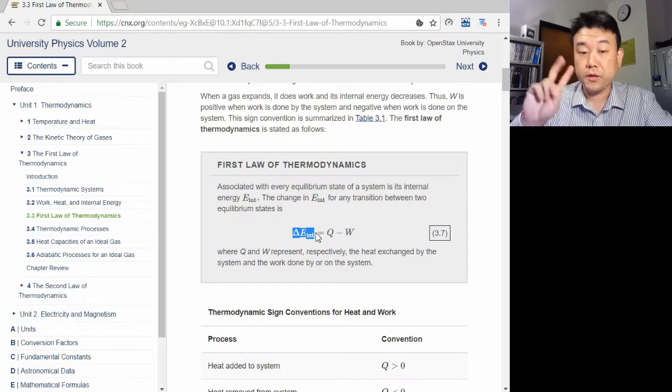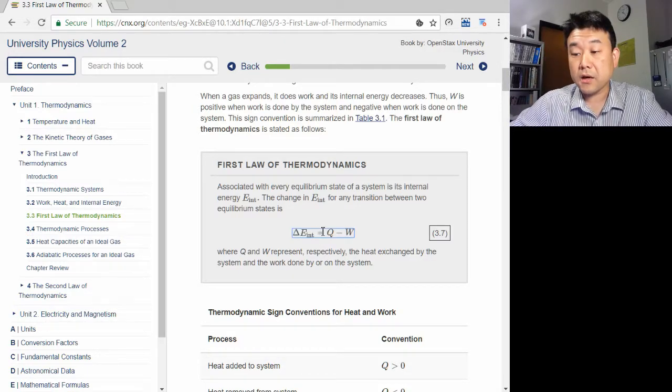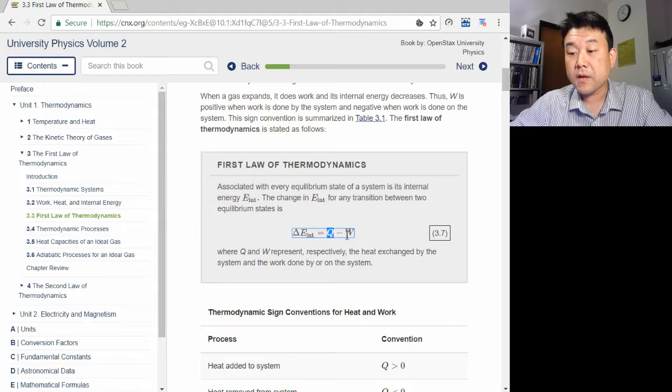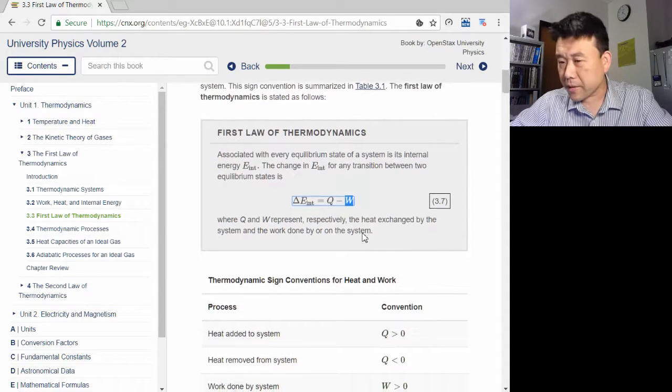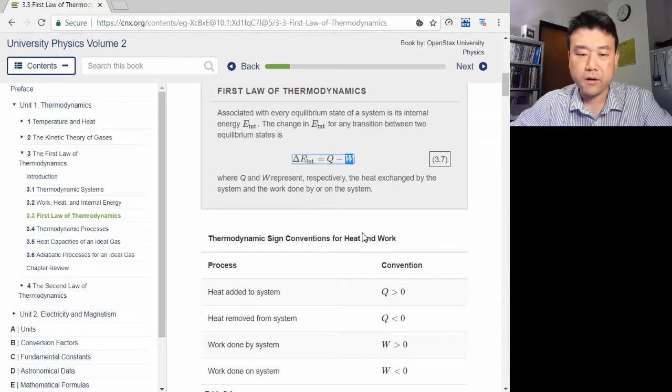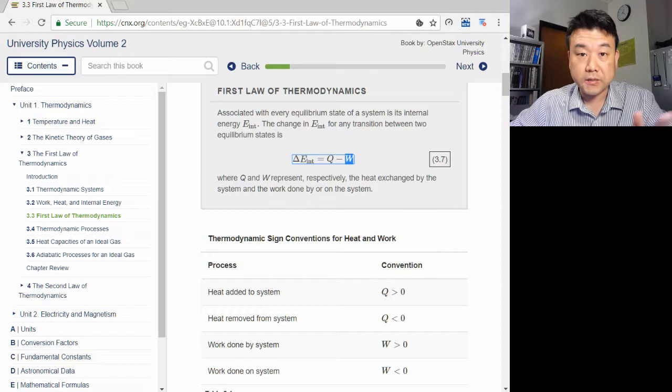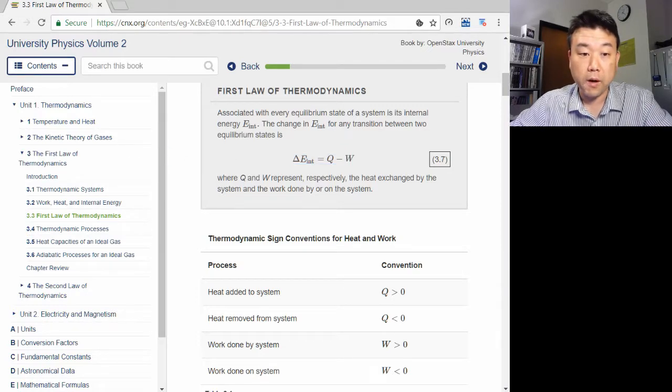It can come from only two sources. It can come from net transfer of heat into the system, and energy can leave the system through work done by the gas. By the way, with the first law, there are different sign conventions out there. For physics courses, the sign convention in your textbook is the most common one.